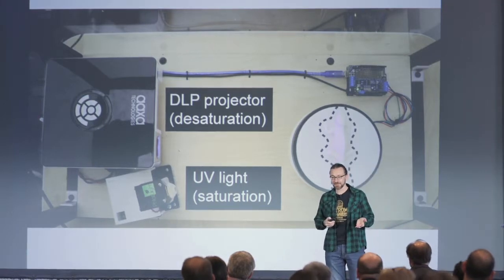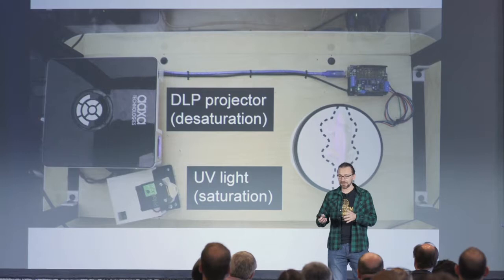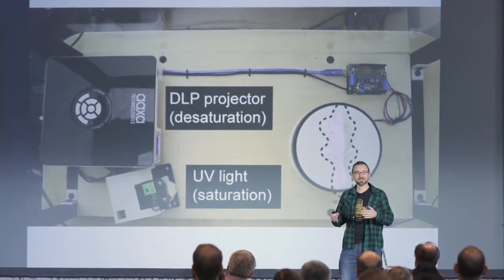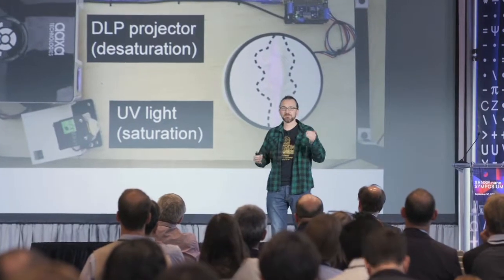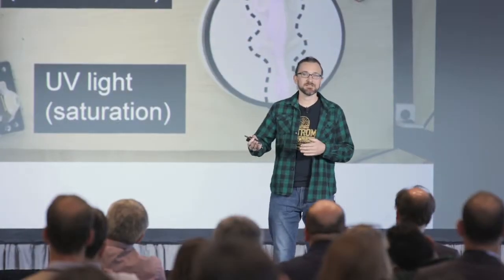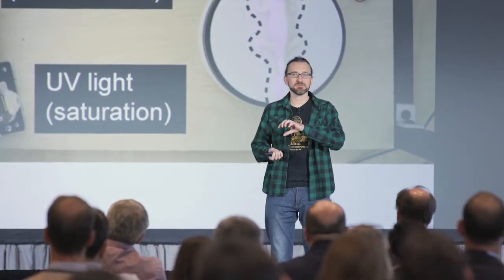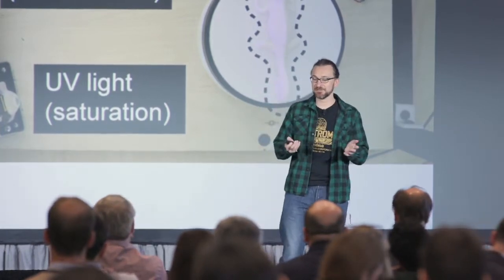This is how our system looks like. On the right side we have the platform where we can put the object — at the moment it's quite small, the size of a model car or a shoe, but the system can be extended as large as you want. We have the DLP projector for desaturating and deactivating the photochromic dye, and the UV light for activating it. This makes the process reversible — we can increase saturation with UV light and deactivate it with the DLP projector.